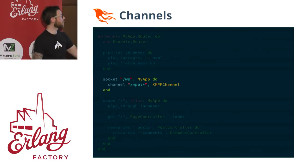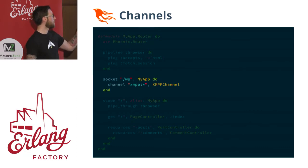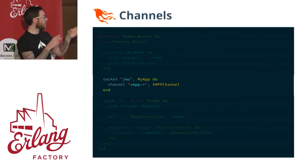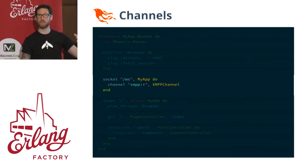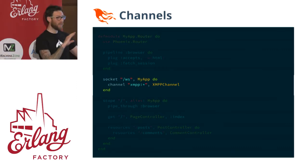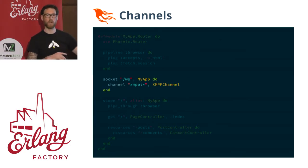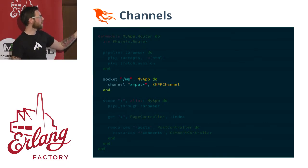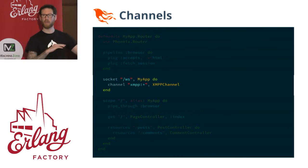In order to use channels, you just plug it into your router. You say socket and give it some type of path — in this case WS for WebSocket. You set up a channel with a name that's basically a topic with colon subtopic. In this case we're using an asterisk as a wildcard, meaning any string will match on it. You could have xmpp:lobby and only lobby messages would be handled by this channel, or maybe have a separate lobby channel.